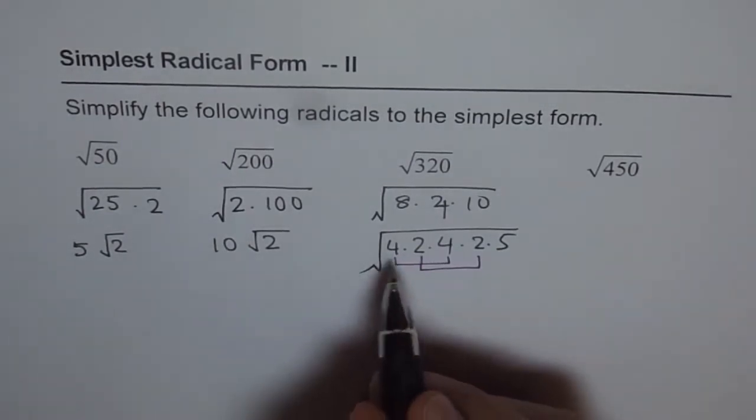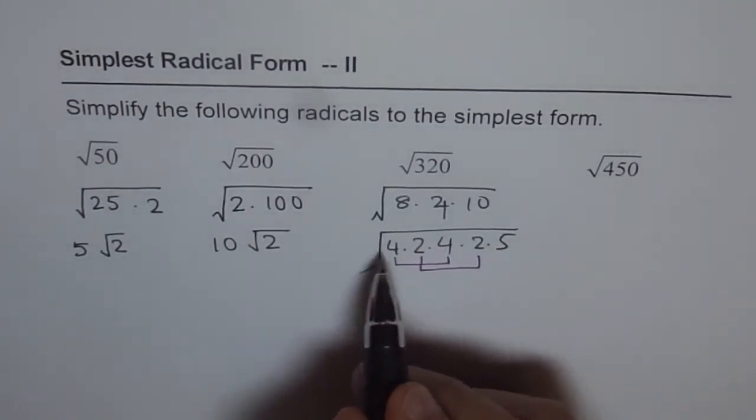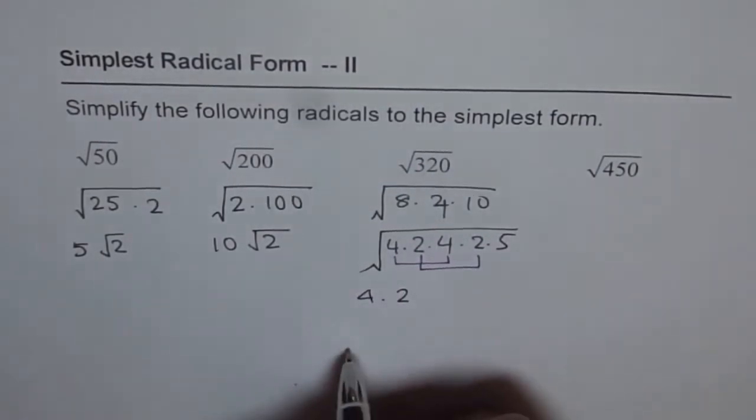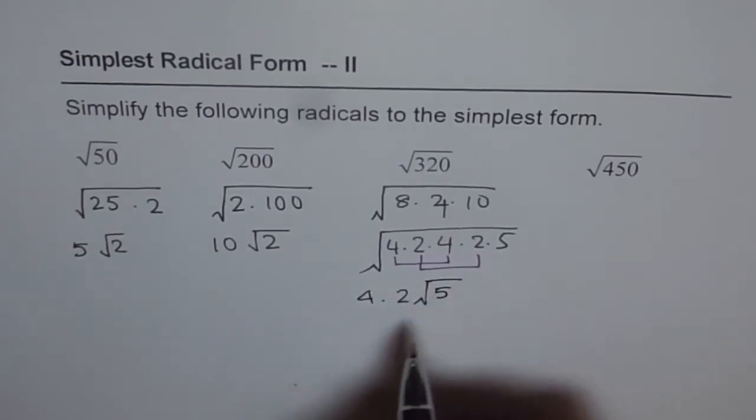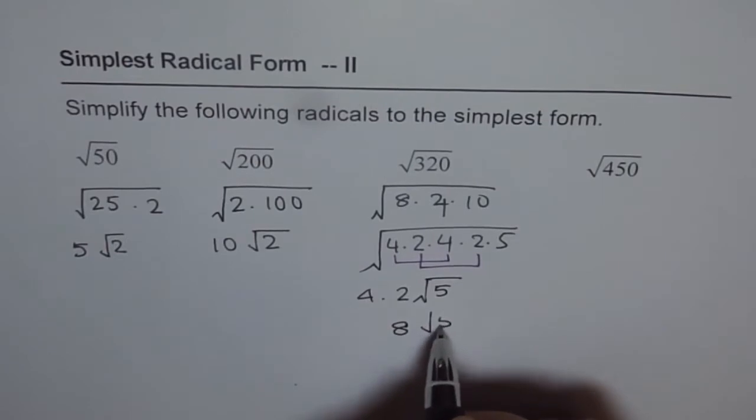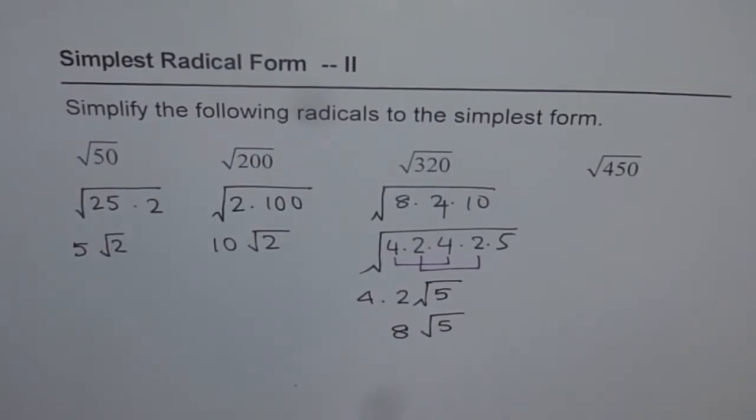So we can factor one of the 4s out, times one of the 2s out, times 2. And within the square root, we get 5. 4 times 2 is 8. And we can write this as 8 square root of 5. That is one way of doing it.